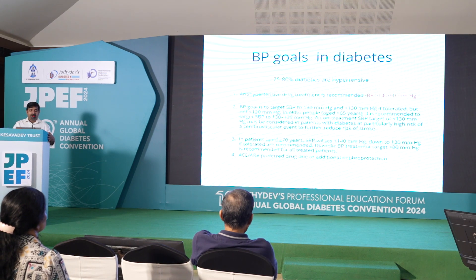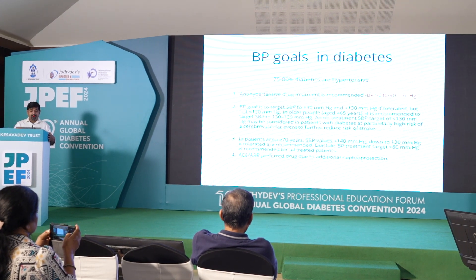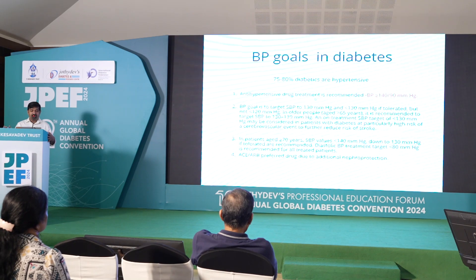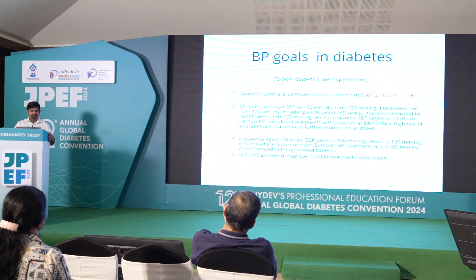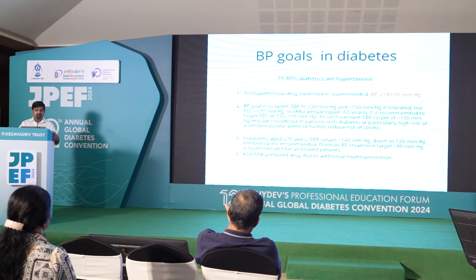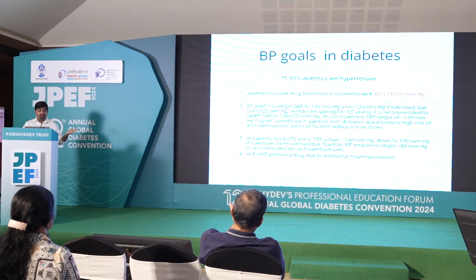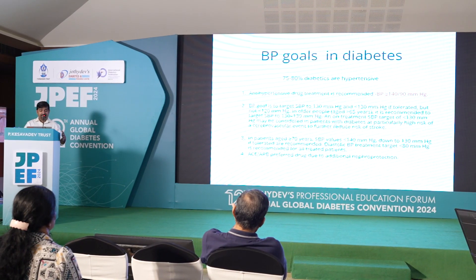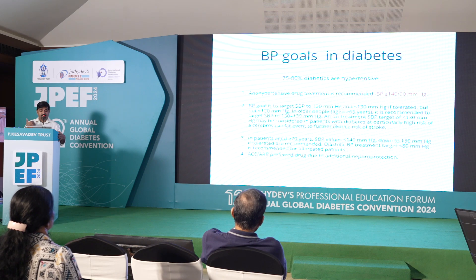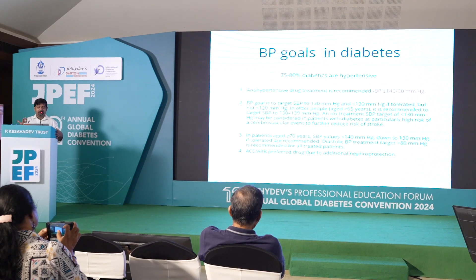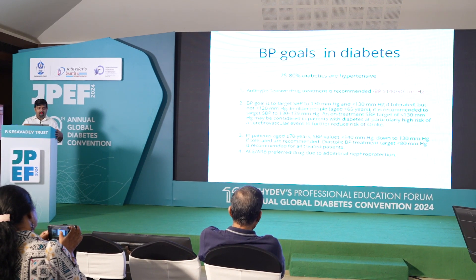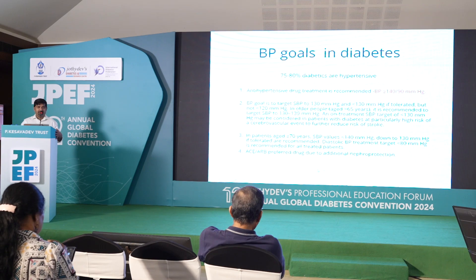Majority of diabetics are hypertensive, and hypertension contributes to heart failure with preserved EF. The goal is 140/90 as the threshold to treat, with targets below 130/80. For the elderly population, because of the risk of hypotension and postural hypertension, a target of less than 140 is appropriate. ACE inhibitors and ARBs are the preferred drugs because of additional nephroprotection. Thank you very much.